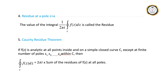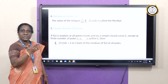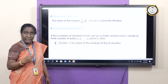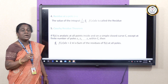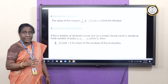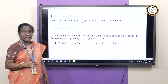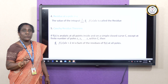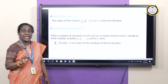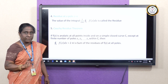The fourth definition is residue at a pole. Based on the concept of a pole, we calculate a numerical value called the residue. The residue is the value of (1/2πi) · ∮_C f(z) dz, calculated at each and every pole of the function f(z).